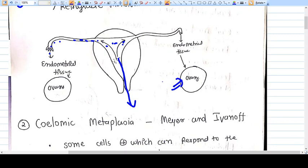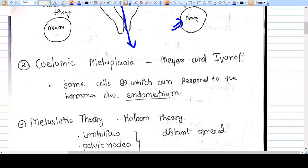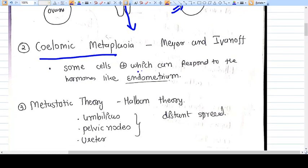The most common organ affected in endometriosis is the ovary. The second theory is coelomic metaplasia. During body development, some cells that develop into endometrium are already present in the ovaries and alongside tissues. When estrogen and progesterone cyclical cycles occur, these cells are activated and converted into endometrium. This coelomic metaplasia theory was proposed by Mayer and Ivanoff.